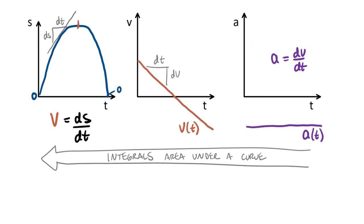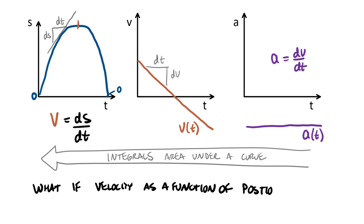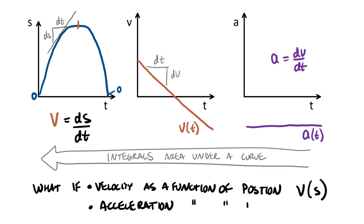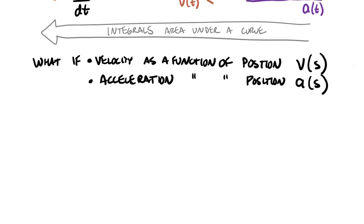What happens if we have a problem where velocity is given as a function of position — a v as a function of s — so instead of time in the equation, it has an s? And what if acceleration is also given as a function of position, an a as a function of s? If we took a time derivative directly, it wouldn't make much sense. We need to get things into a form where we can take a position derivative versus a time derivative.